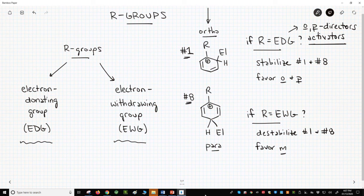EWG R-groups are often called meta-directors because EWG R-groups pull electron density from the ring. They make the ring less nucleophilic, less reactive. Therefore, EWG R-groups are also called deactivators.